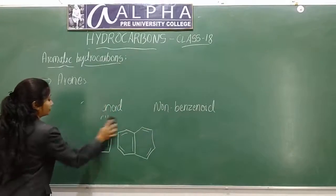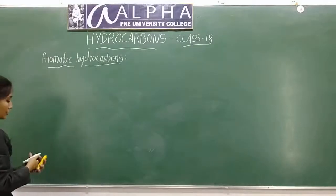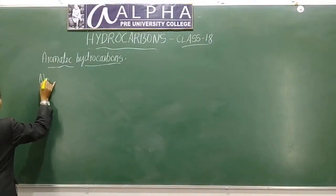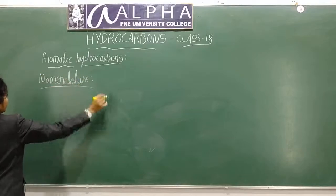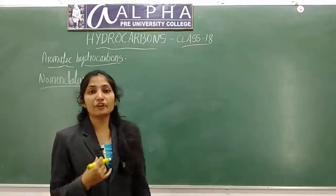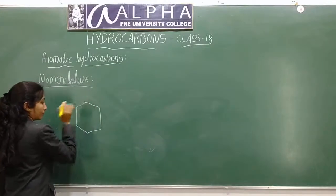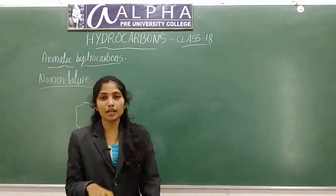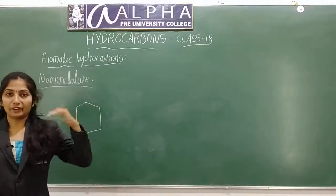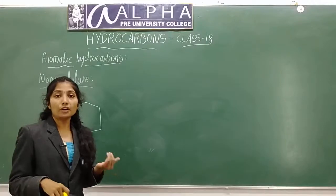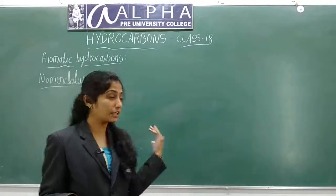First is nomenclature. You have already studied nomenclature. How will you name a substituted compound? For monosubstituted compounds, you name them by the substituent. If it is disubstituted, it leads to three different positions which we indicate differently.